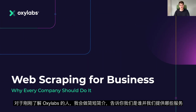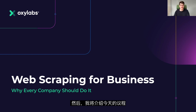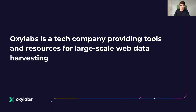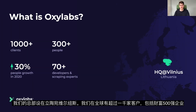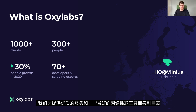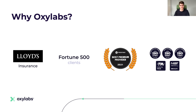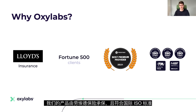To those who are new to Oxlabs, let me briefly tell you who we are and what we do here. Oxlabs is a company that provides various tools that help scrape public information from the web. We are based in Vilnius, Lithuania, and we have over a thousand clients around the world, including Fortune 500 companies. We pride ourselves on providing premium services and some of the best web scraping tools. Our products are covered with Lloyd's insurance and they meet international ISO standards.